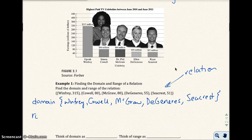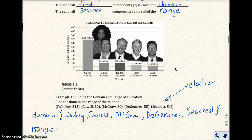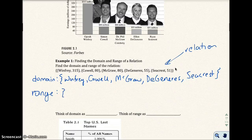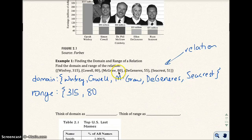The range would be all the y components, or the set of all second components. We look at 315 — that represents millions. We have 80, and notice how we have 80 again; we don't need to write that down twice, just write it once. Then 55 and 51. Those are all the set of all second components, the y values.